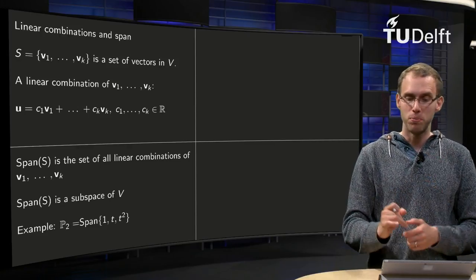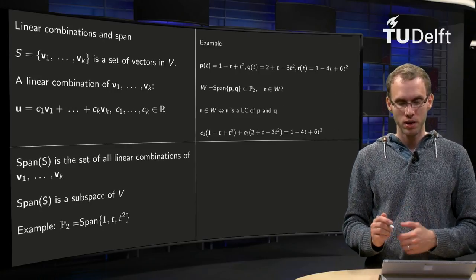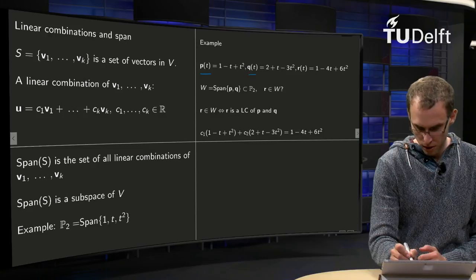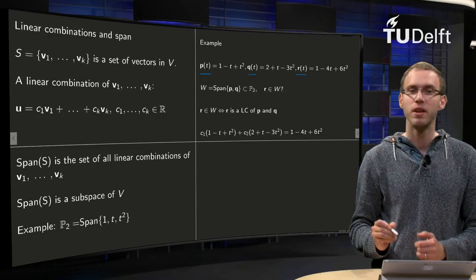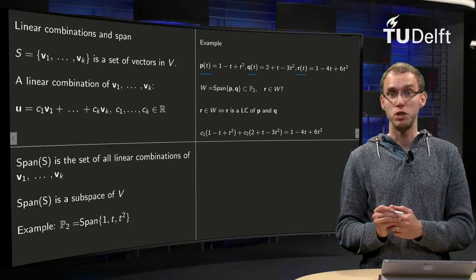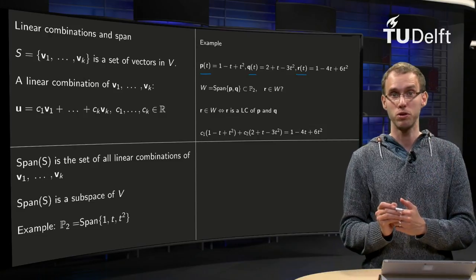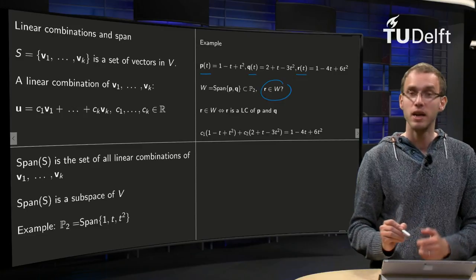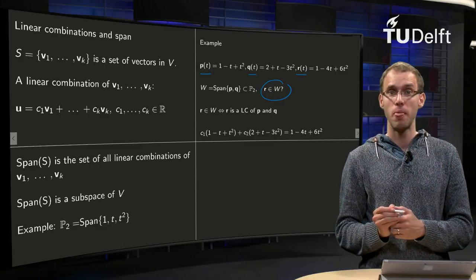Let's look at a bit more non-trivial example. We have three polynomials P, Q, and R, and we set W to be the span of the first two polynomials. And then we wonder whether this third one, R, is also in W.